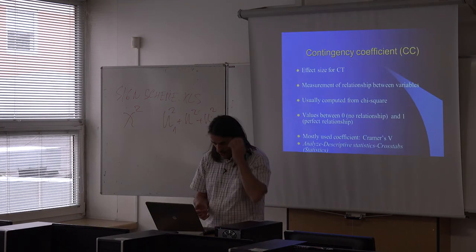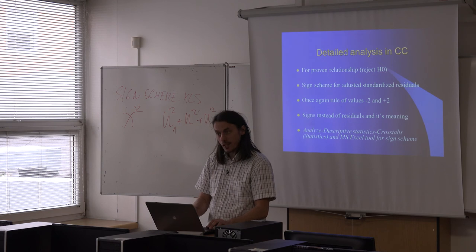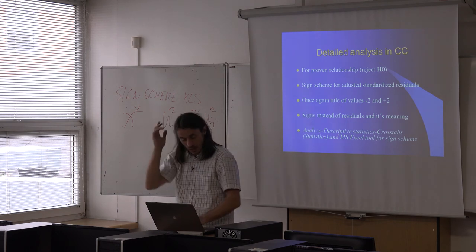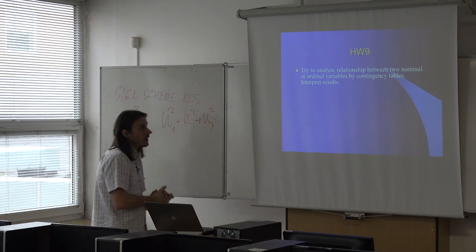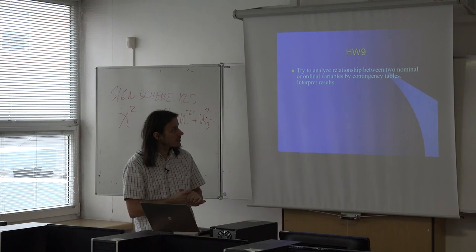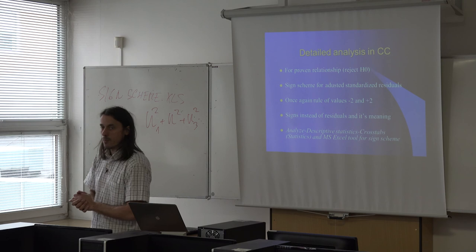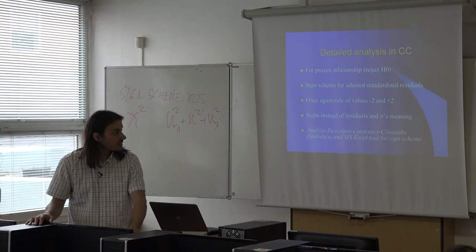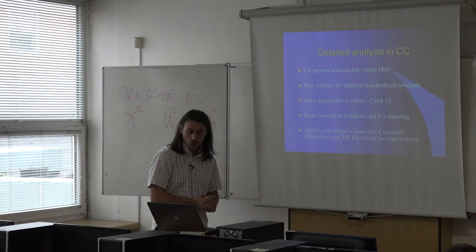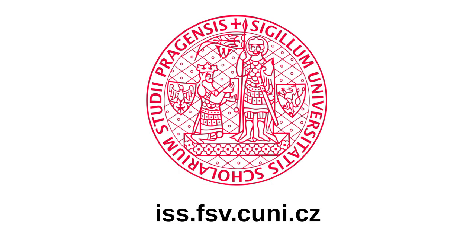We are nearly at the end of the lecture and won't have time for detailed analysis of contingency tables today. For homework, try to analyze a relationship between two nominal or ordinal variables using contingency tables and interpret the results. Next time we will briefly discuss detailed analysis within contingency tables, and then finish with the last topic: correlation coefficients for the relationship between cardinal and ordinal data.